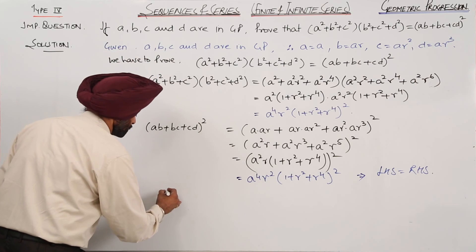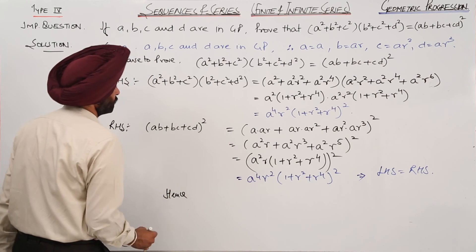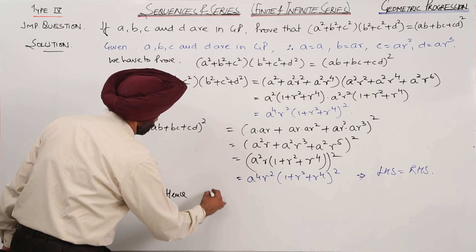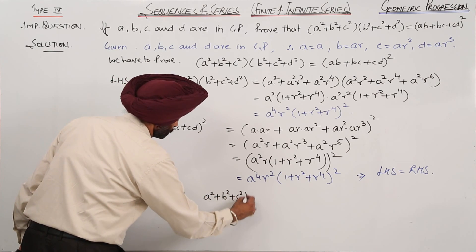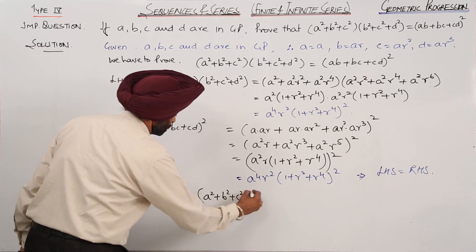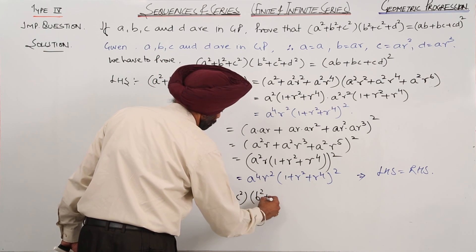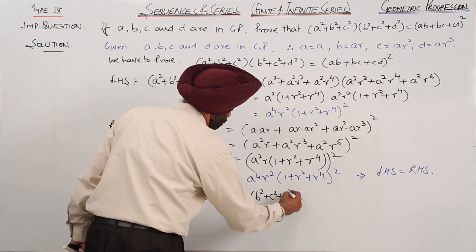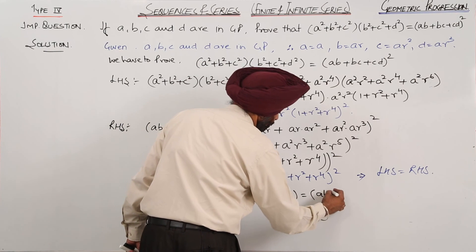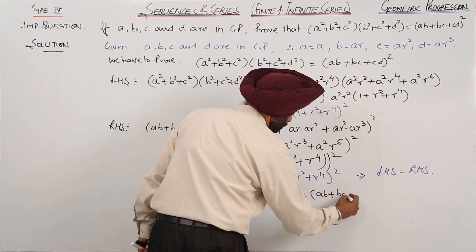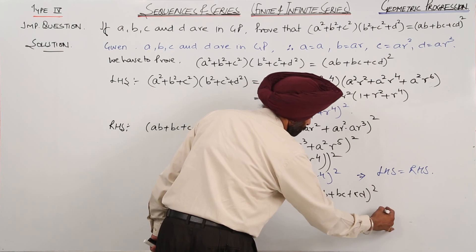Hence, A square plus B square plus C square, multiplied by B square plus C square plus D square, is equal to AB plus BC plus CD whole square. Hence proved.